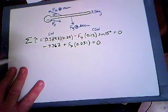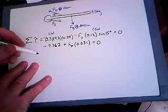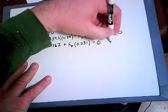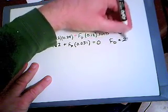So solving for Fd, I would add 7.62 to both sides, divide both sides by 0.031, and I get that force produced by the deltoid muscle has to be equal to 250 Newtons.